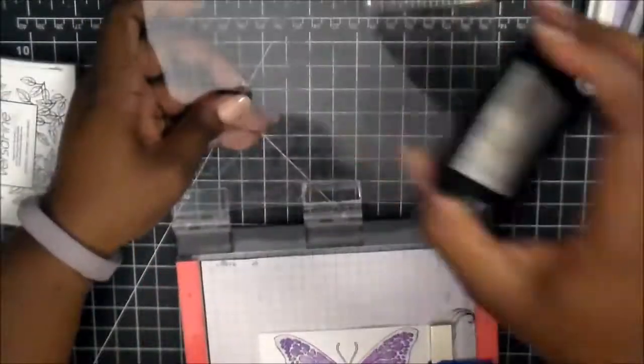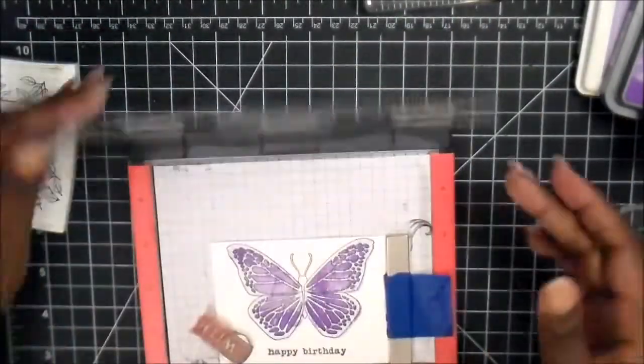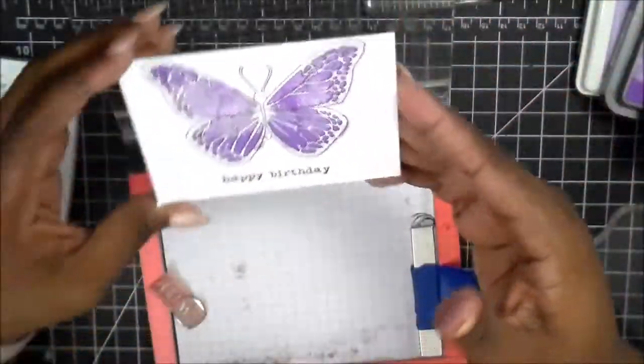So, in that same set, they had a happy birthday. Once again, since it's on the MISTI, I stamped it twice, and so it was a nice, crisp black.